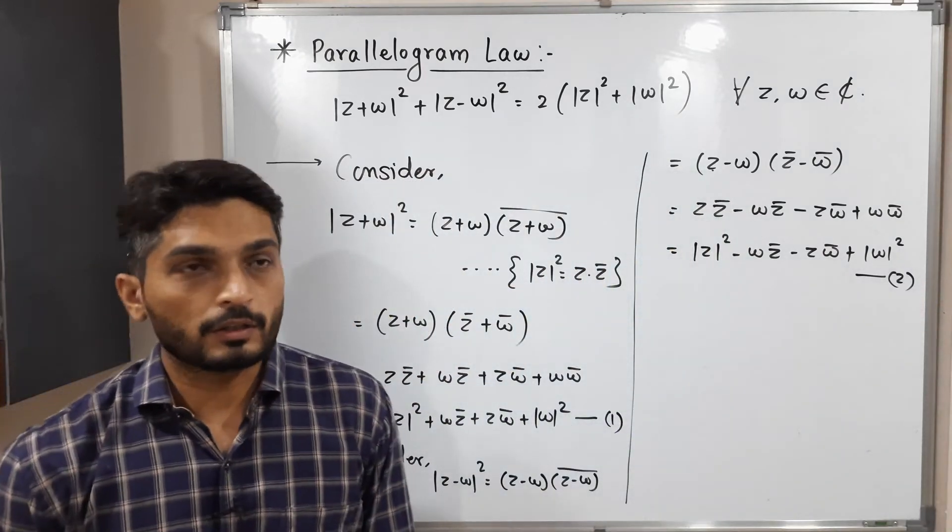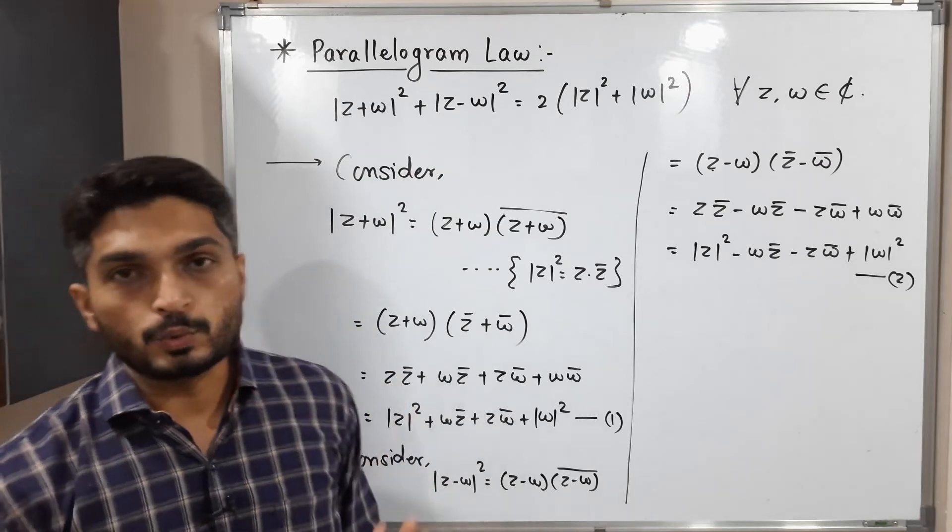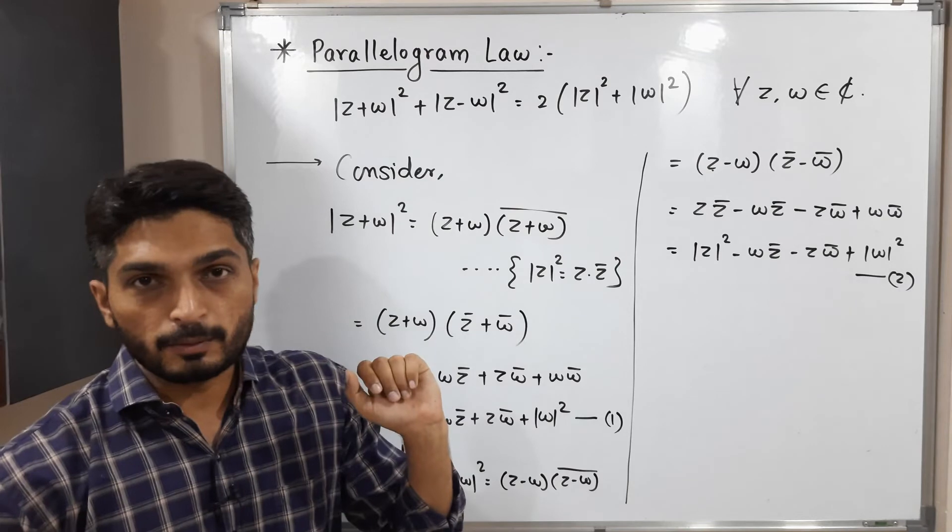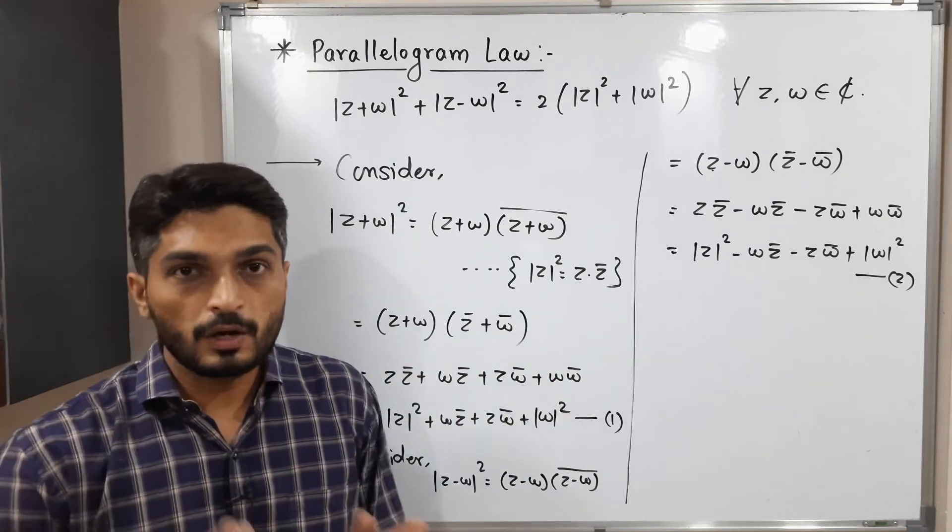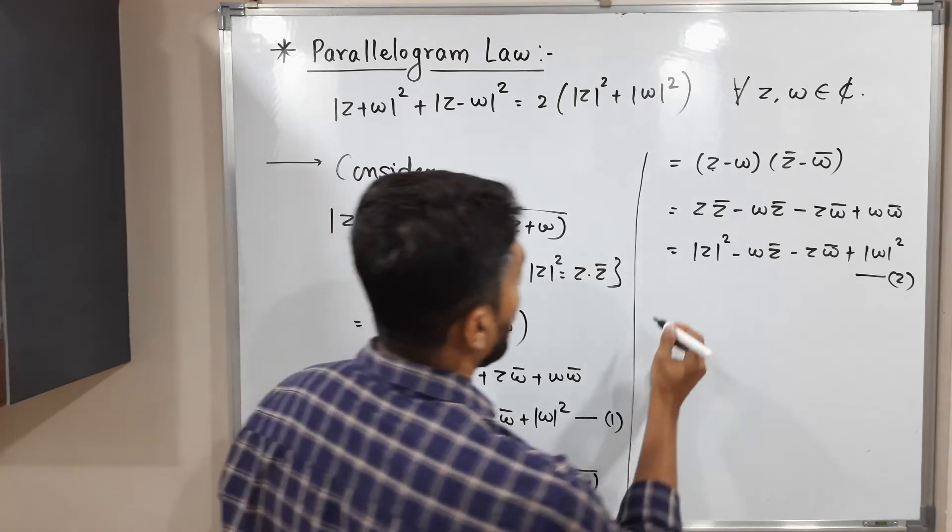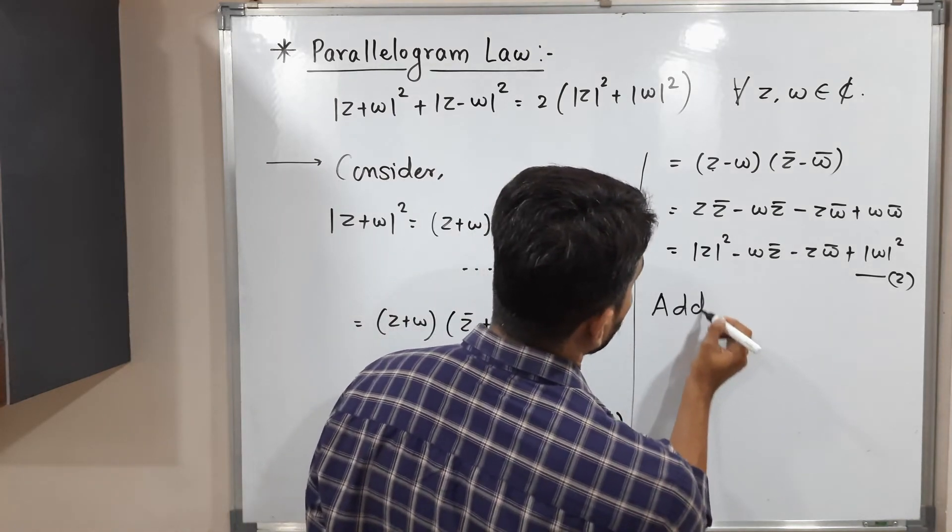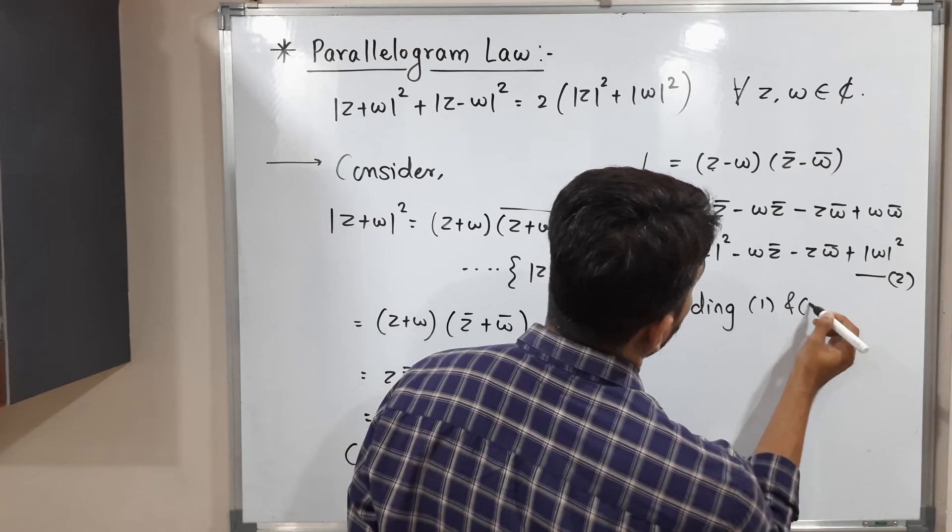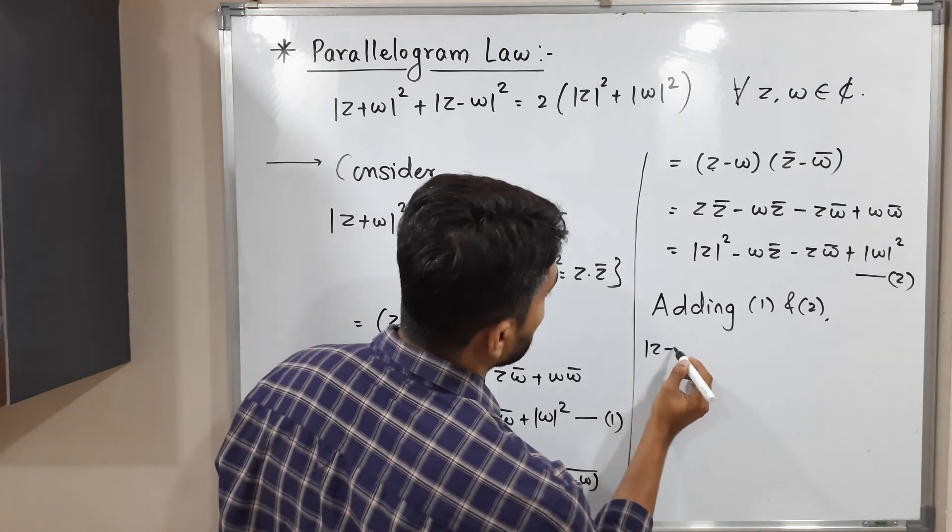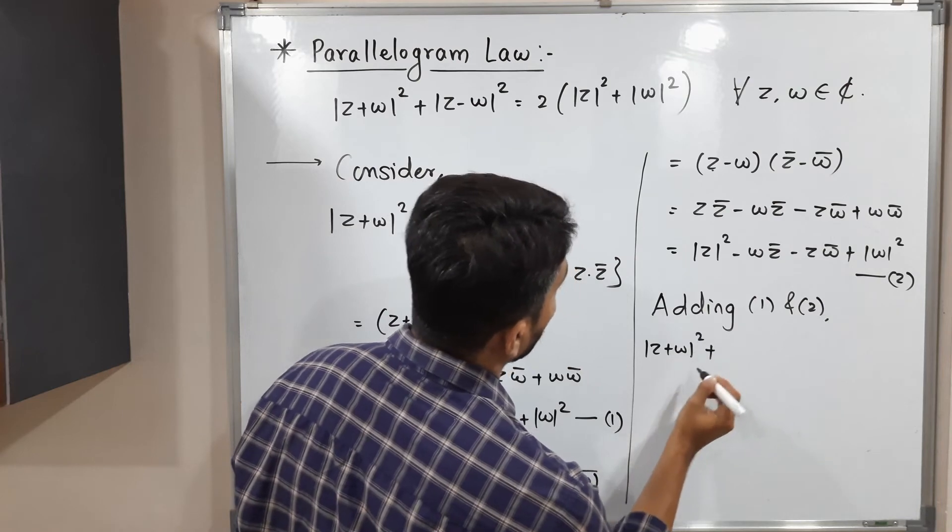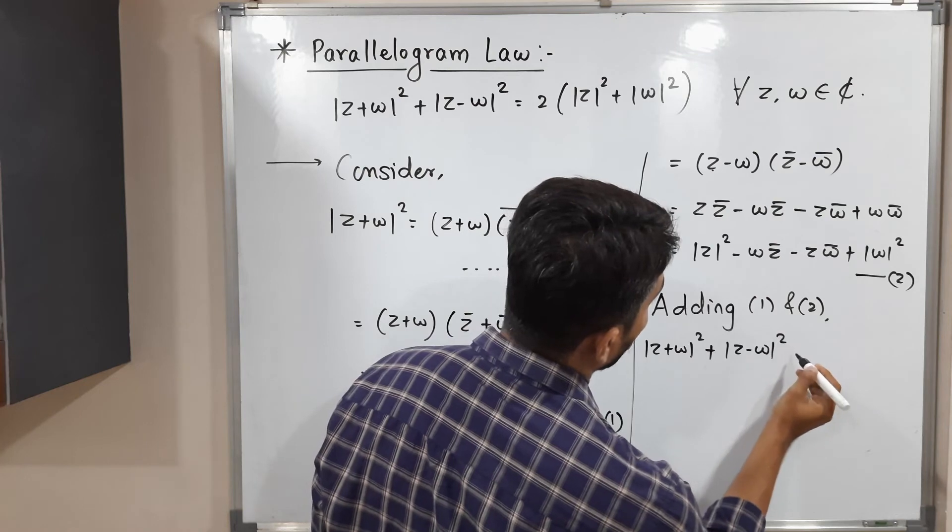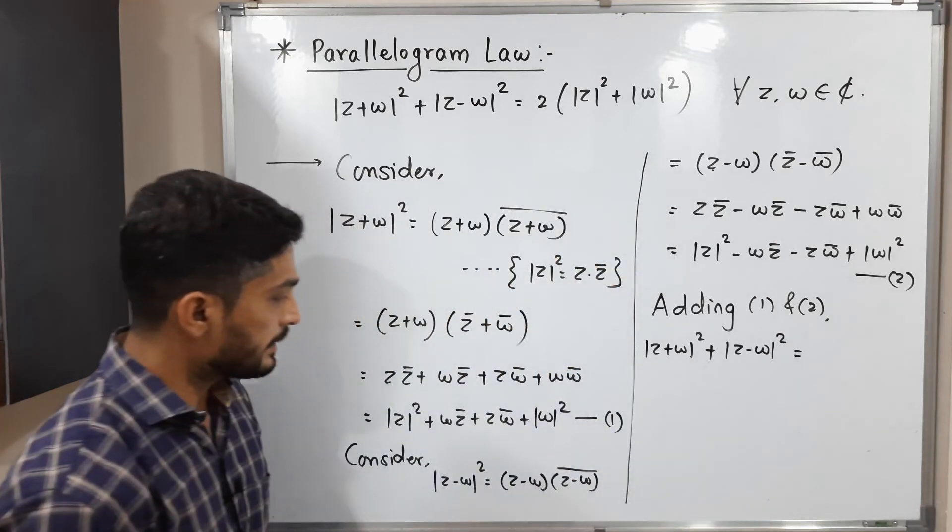See, finally, what we want, we have to add these two terms. So first of all, we found out the value of the first term. After that, we work on a second term. In this way, we got two equations, one and two. So let me add these two equations now. Now, adding one and two. So let us see what will we have. So mod z plus w square, we are adding it with mod z minus w square is equal to, let us add.